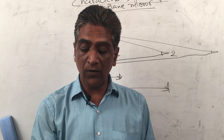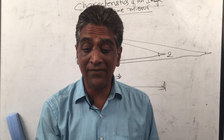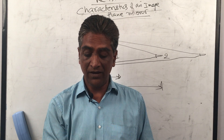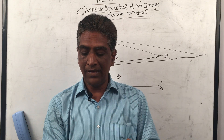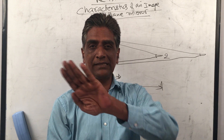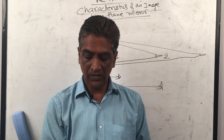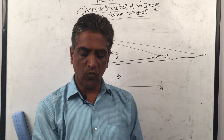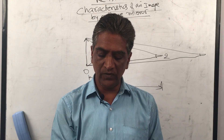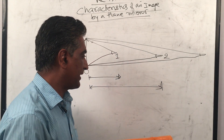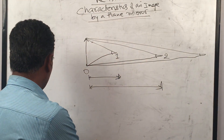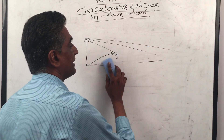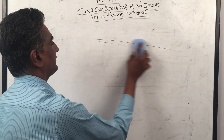You also might have observed the right-left inversion of your image in a plane mirror. Why does an image suffer lateral - that is right-left - inversion? This is very simple. See Figure 11. He has given Figure 11, and we'll draw it here.